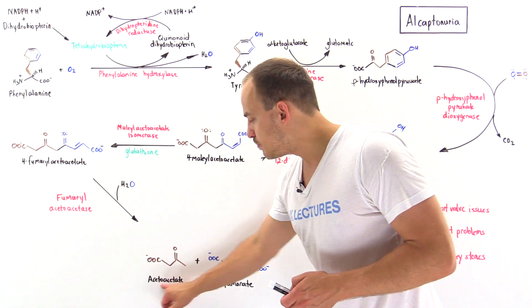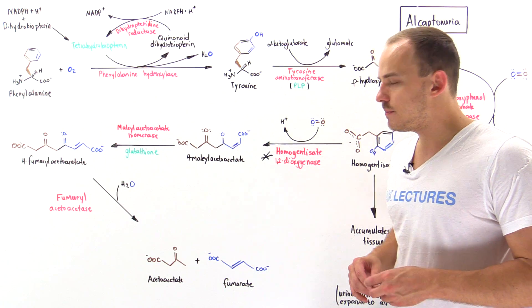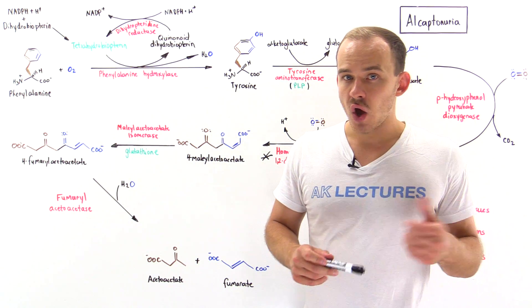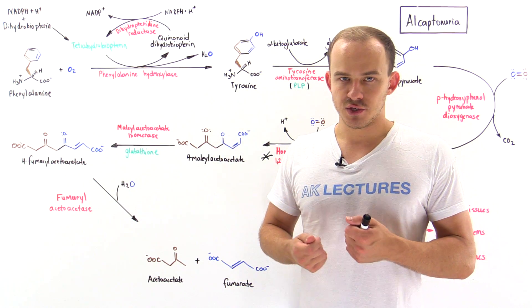Now in our liver, this molecule can be used to form ketone bodies while fumarate can be used to form glucose. Both ketone bodies and glucose molecules can be used by the cells of our body to generate high energy molecules.